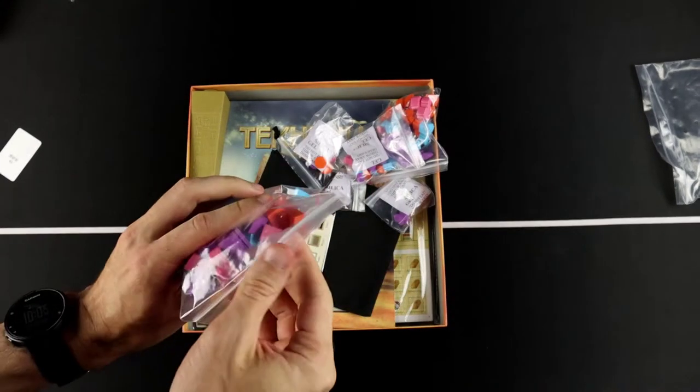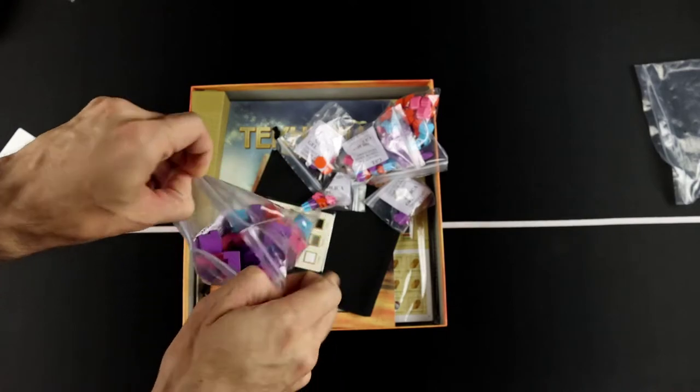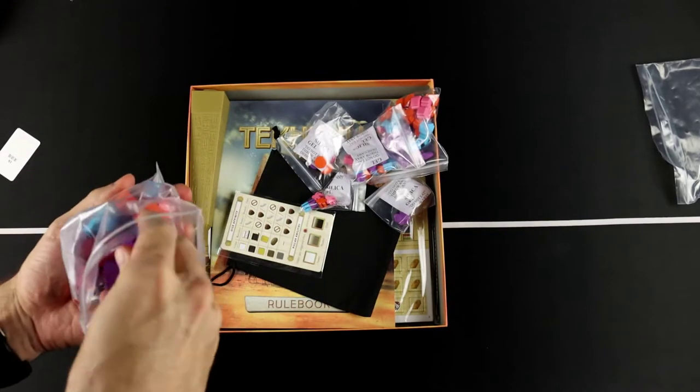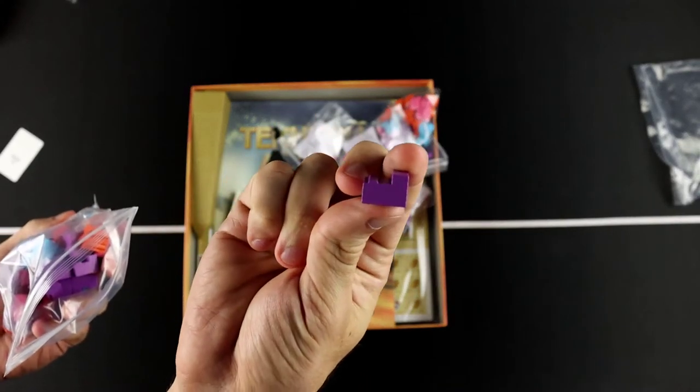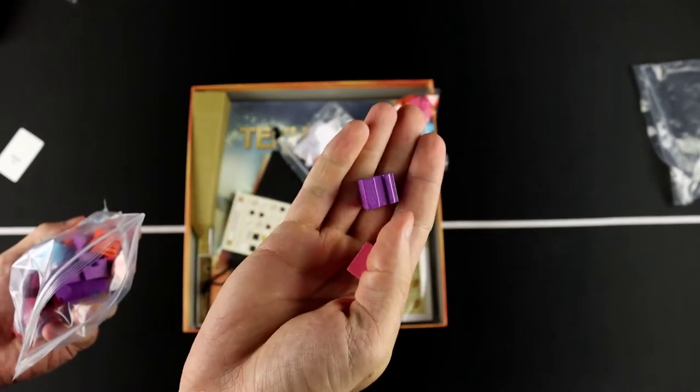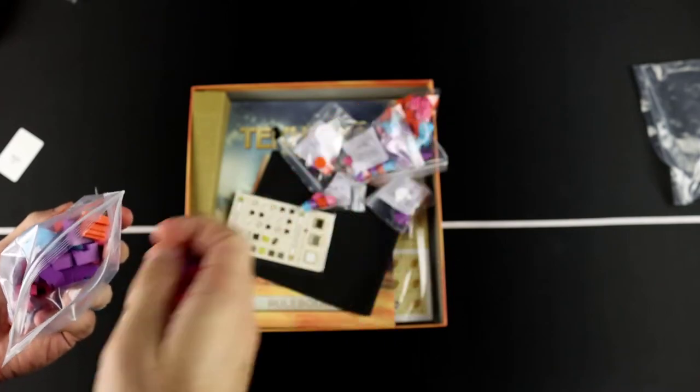And then we've got a few other pieces here. Let's see if we can figure out what these are. Not entirely sure what that shape is. I'm sure we'll figure that out down the road.